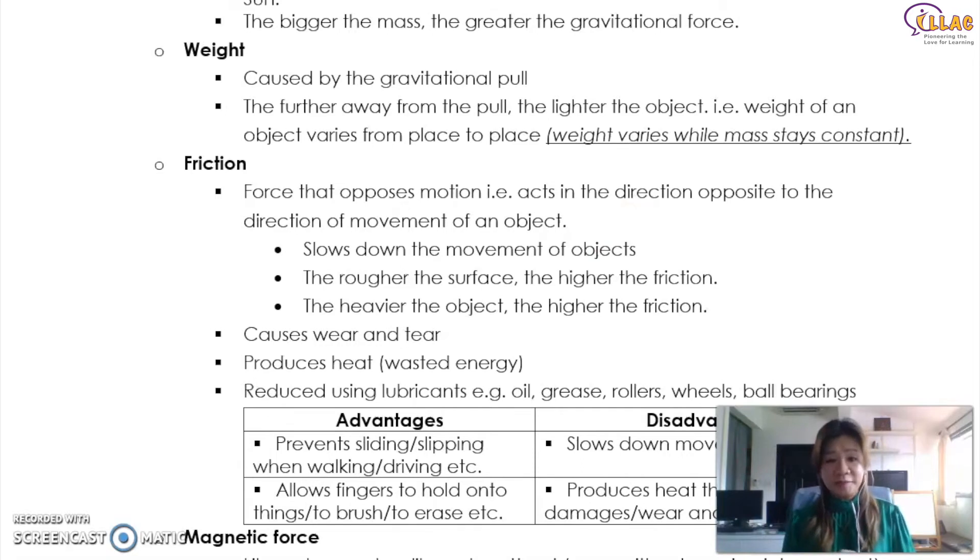So what is weight? Weight is caused by the gravitational pull from the earth. So the further away from the pull, the lighter the object, which means we are actually heavier than the astronauts in space. Does that make sense? That's why they actually can appear to be floating. Because the gravitational pull is not keeping them down. So the weight of an object varies from place to place. So the higher you go, the lighter you go.